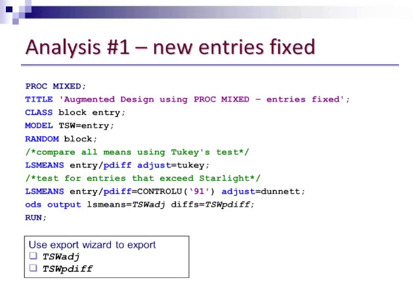In SAS, you can sort your output in any way you want. Since I'm quite comfortable with Excel spreadsheets, what I generally do is create new datasets using ODS output, then export those datasets using the export wizard to Excel, and then sort or make selections from there. So the ODS output is essentially creating new datasets — one that includes the adjusted means, and another that shows the results from the multiple comparison tests.